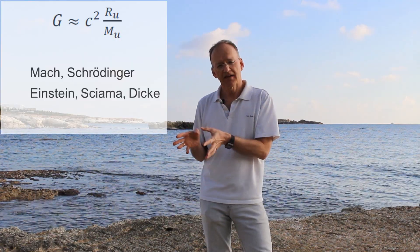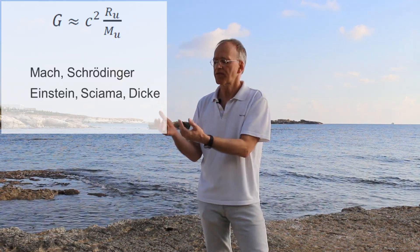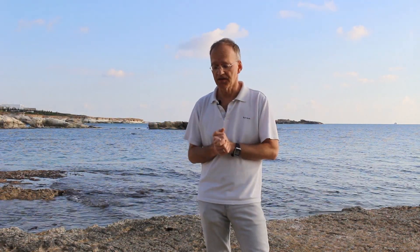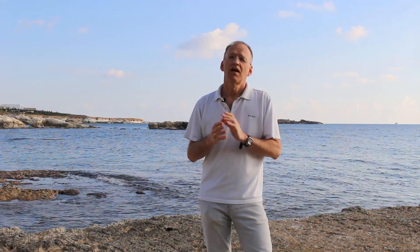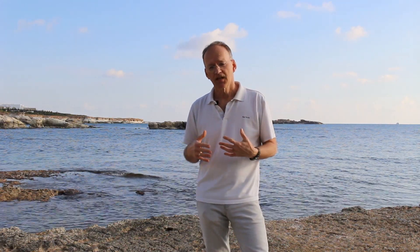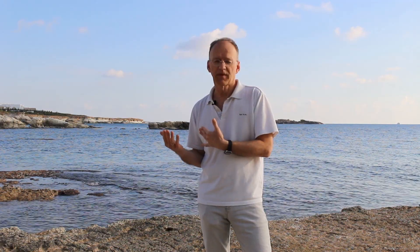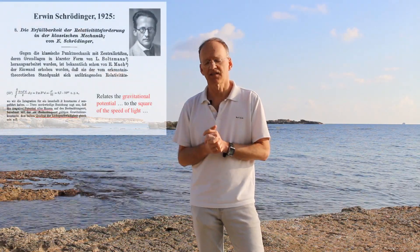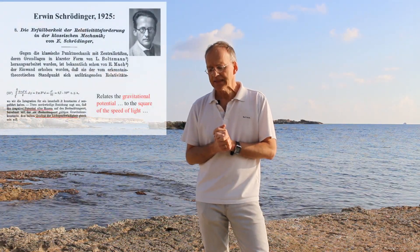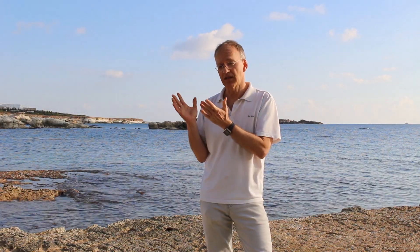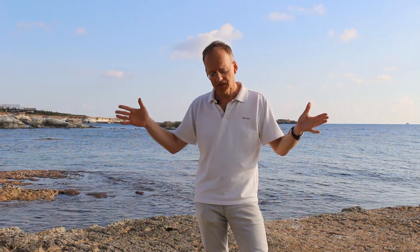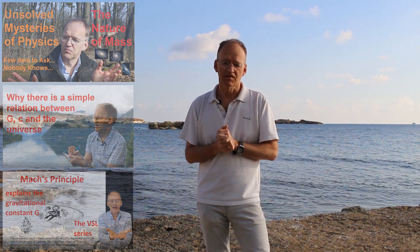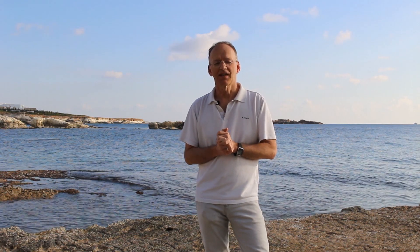coincides with the speed of light squared times the radius of the universe divided by the gravitational constant. You can phrase this another way: the gravitational potential of the entire universe is more or less the same order of magnitude as the speed of light squared. That was a coincidence first discovered by Erwin Schrödinger in 1925. These kinds of coincidences — this one related to Mach's principle — are the reason we have to wonder about constants of nature, and maybe eventually we can explain them.